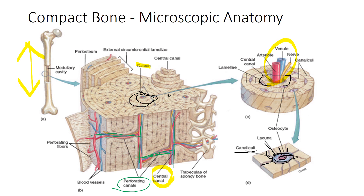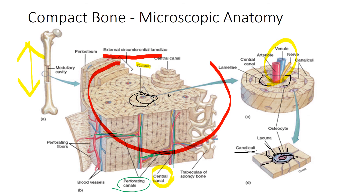Around the entire bone, we find the circumferential lamellae — rings of bone found immediately internal to the periosteum or internal to the endosteum, depending on location. These run the entire circumference of the bone.